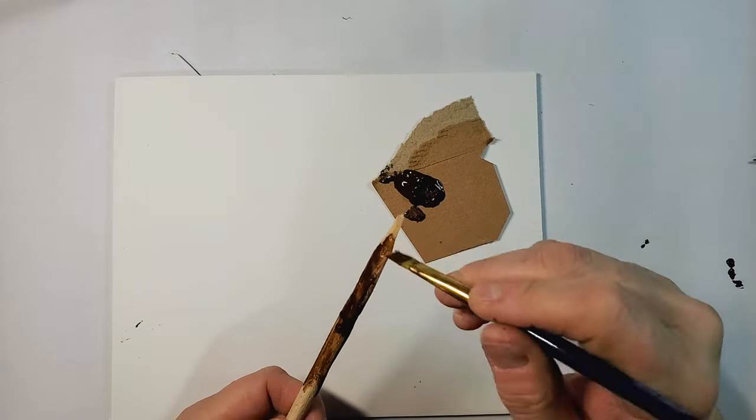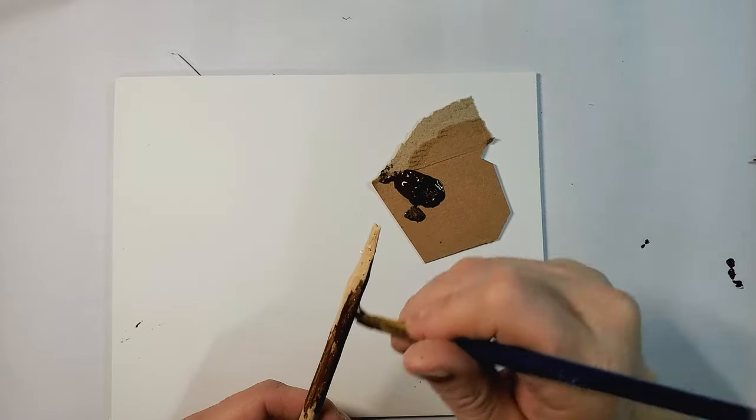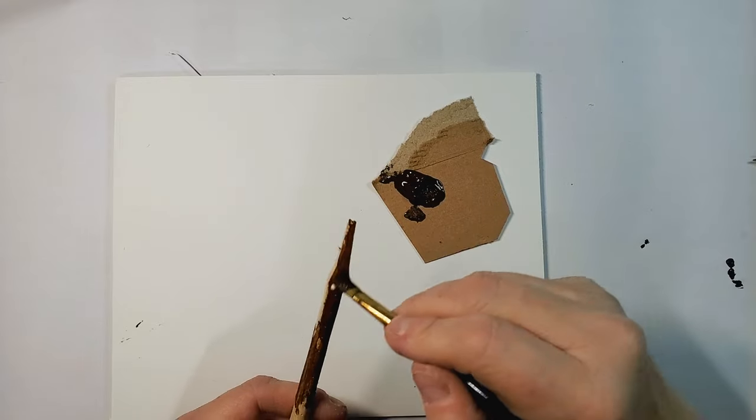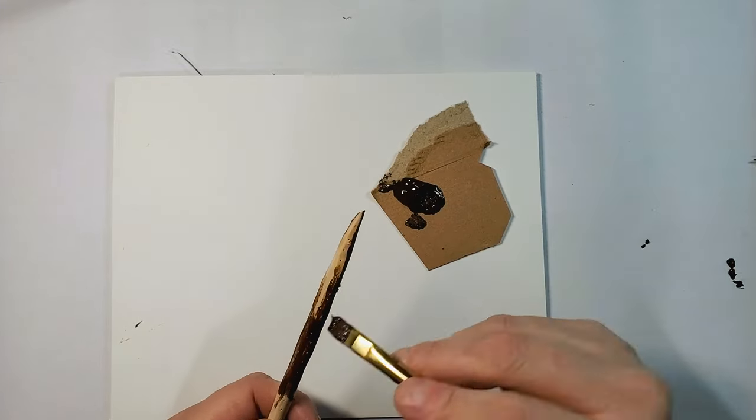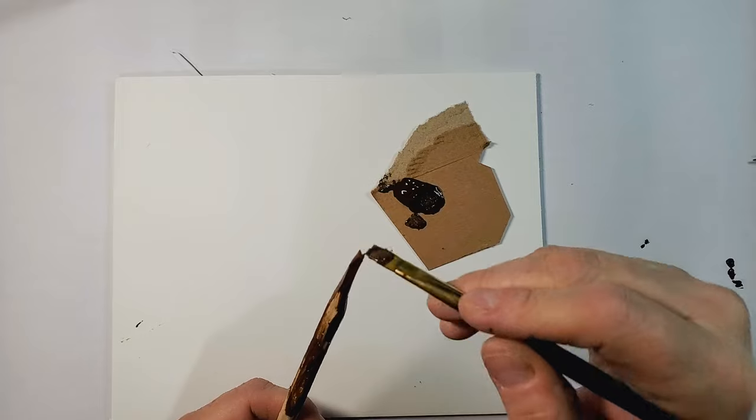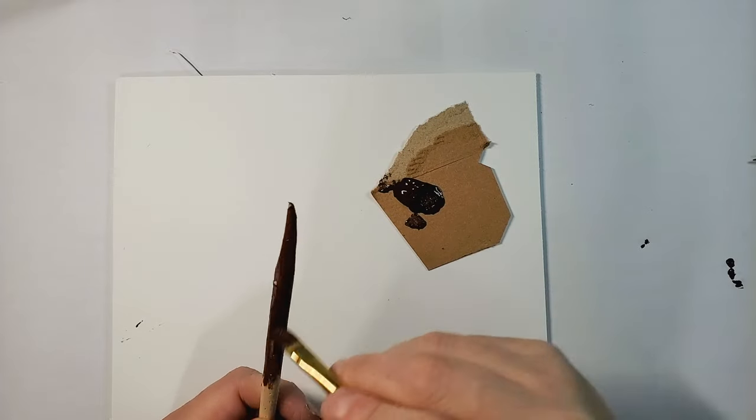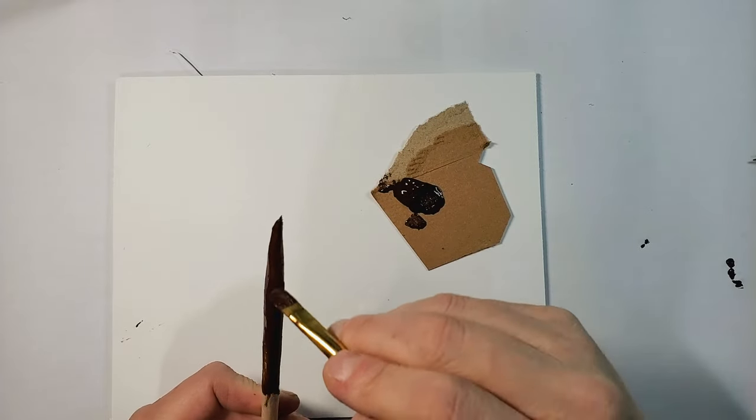So we're just going to do a coat of brown or any kind of brown on your tree trunk. That will be the base color before we apply the last color.